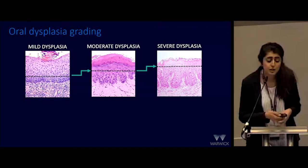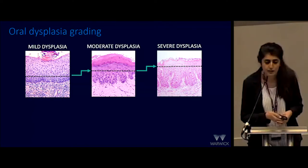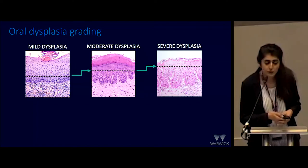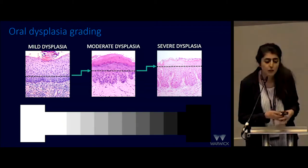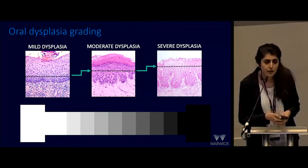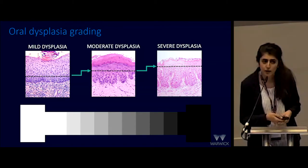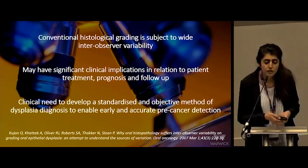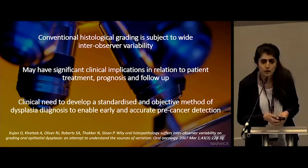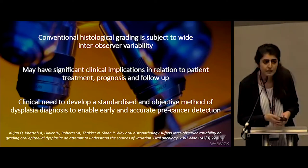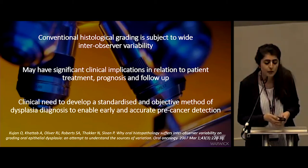The cytological changes generally progress and are more marked as the dysplasia grade progresses. For pathologists, it might be easier to differentiate between mild and severe dysplasia, but it is much harder to differentiate between mild-to-moderate and moderate-to-severe. As a result of the varying features that can be noted, there is wide intra-observer variability, which can have significant clinical implications because the grade of dysplasia determines the treatment offered and the level of surveillance for that lesion. There is therefore a clinical need to develop a standardised and objective method to eliminate this subjective analysis and enable early pre-cancer detection.